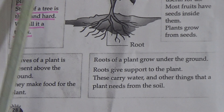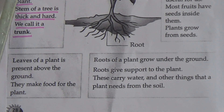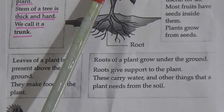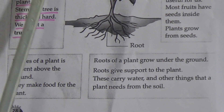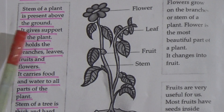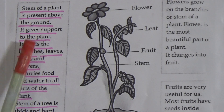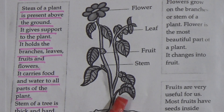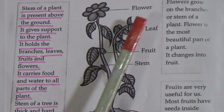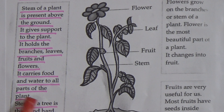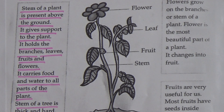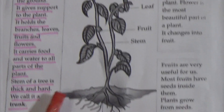All these lines are very important and you have to memorize them. The function of stem: stem is above the ground, it gives support to the plant, it holds the branches, leaves, fruits and flowers, and it carries food and water to all parts of the plant. The stem of a tree is thick and hard and we call it trunk.